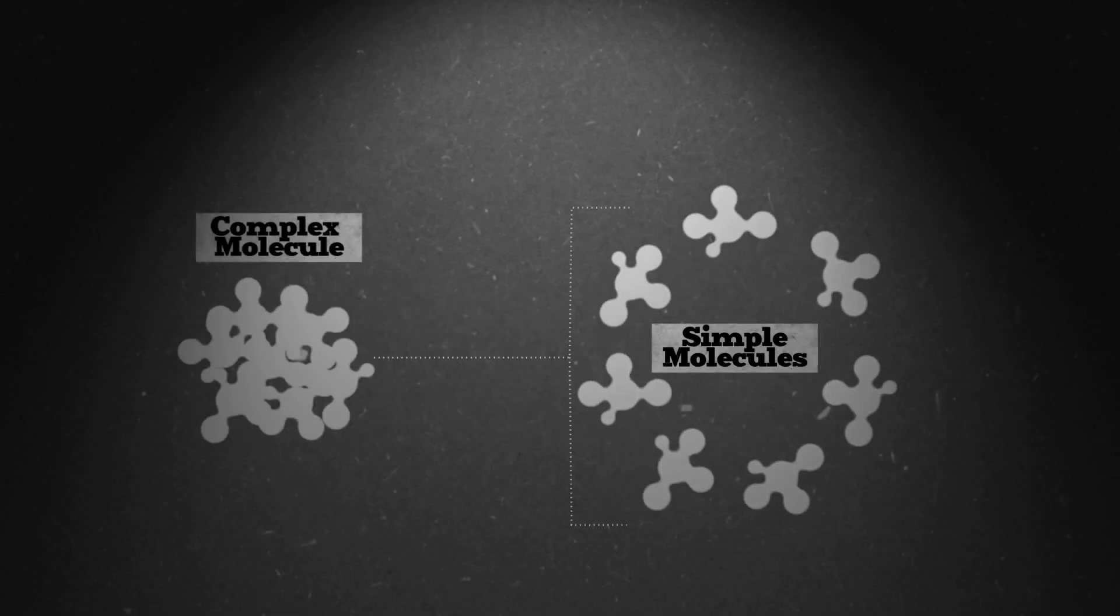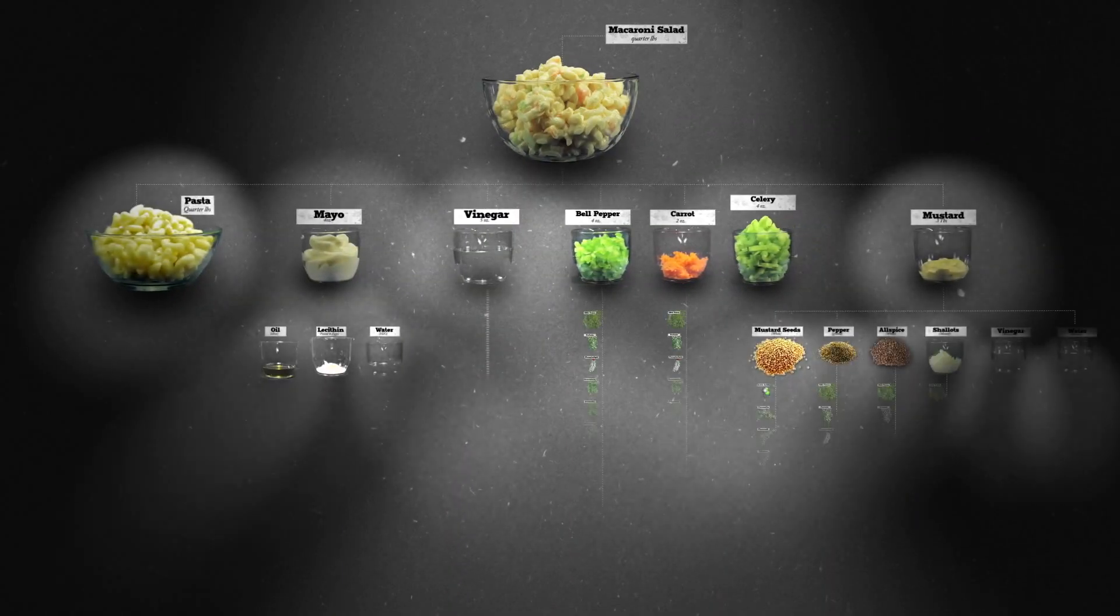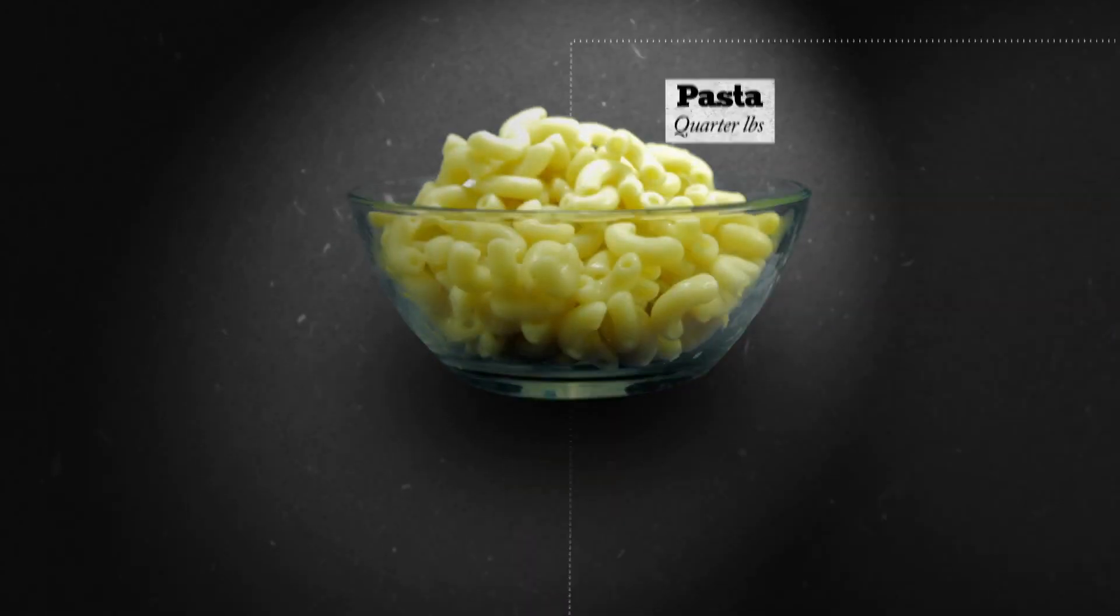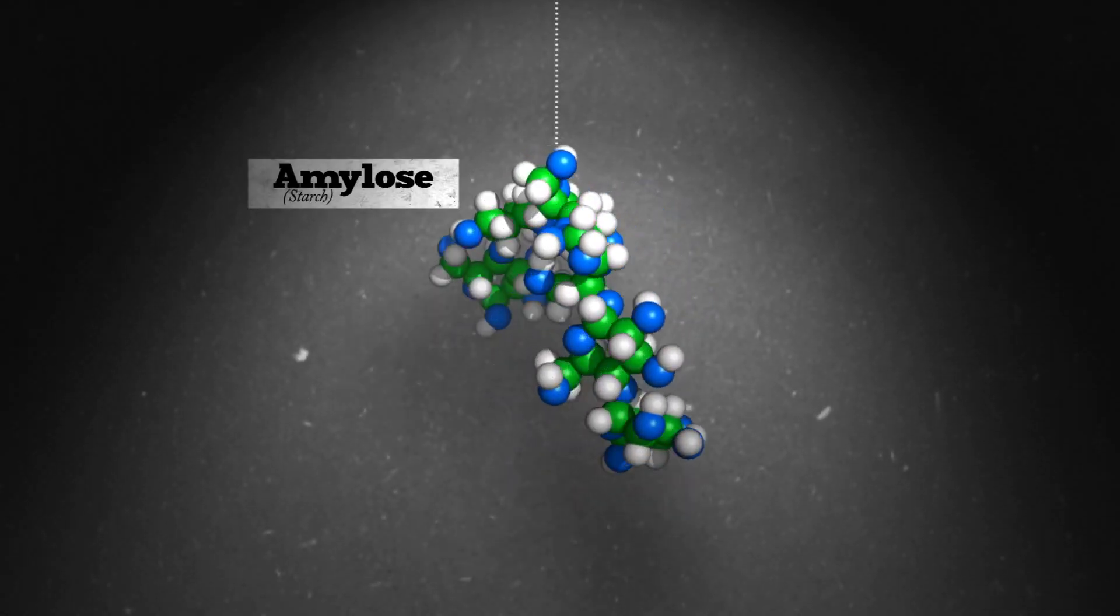Many larger complex molecules are just a bunch of smaller molecules bonded together like building blocks. Here again, macaroni salad provides a nice example. If you look at the pasta, you'll notice it's made of a lot of this stuff, starch, which is this molecule, otherwise known as amylose.